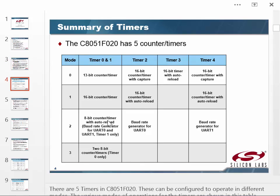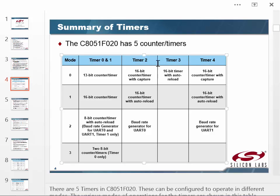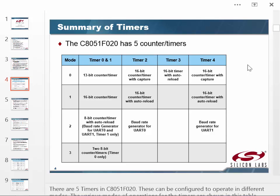This processor has five counters and timers. Timer 2 in mode 1 is a 16-bit counter/timer with auto-reload. Timer 4 can operate in mode 1. Timer 3 can only operate in mode 0. We've got not just five counters and timers, but different modes they can be operated in. We could spend hours talking about that.